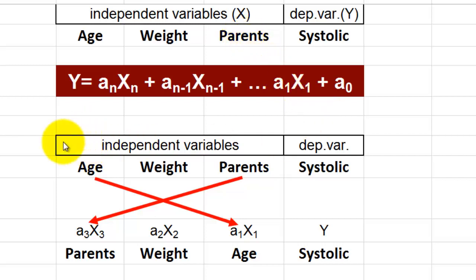To predict the systolic blood pressure based on those three independent variables, we need a formula like this: a slope times one independent variable, the slope of the second independent variable, etc., and finally an intercept.